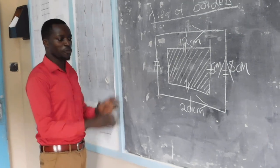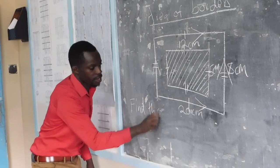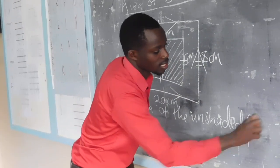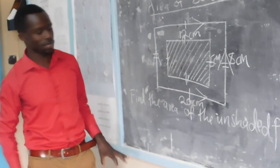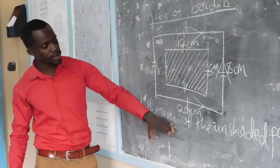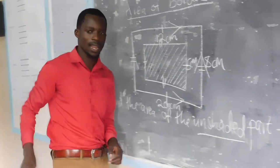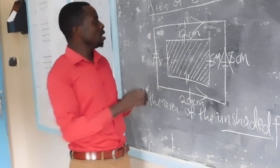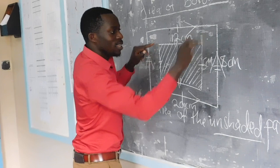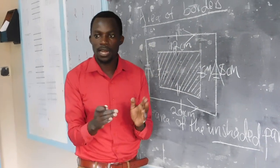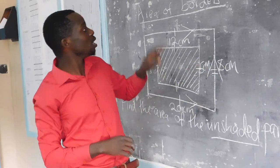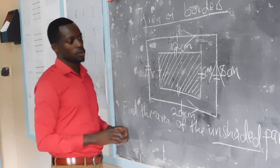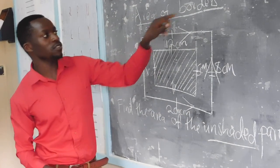Our question is: find the area of the unshaded parts in the above figure. This is very important — underline 'unshaded' — because we want the area that is not shaded. The inner rectangle is shaded, and the unshaded part around it is the border that we are talking about. We want to find the area of that border.